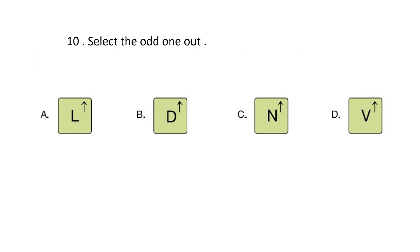Question number 10. Select the odd one out. The answer is Option B — D is the odd one out because D has a curved line while the others have straight lines only.